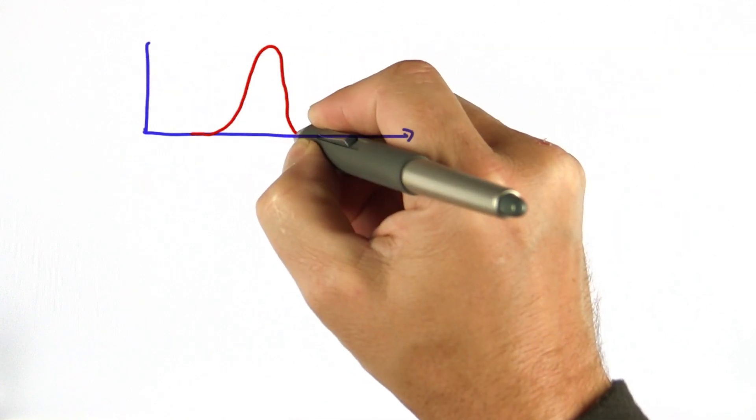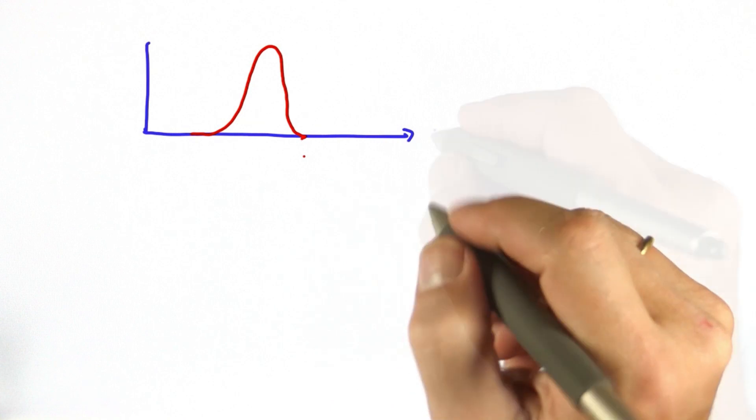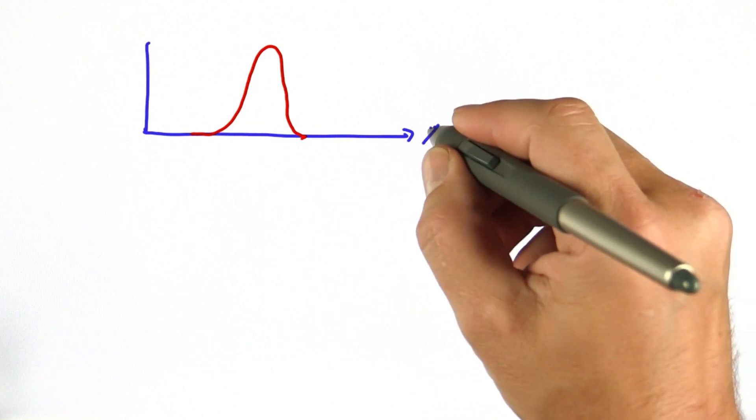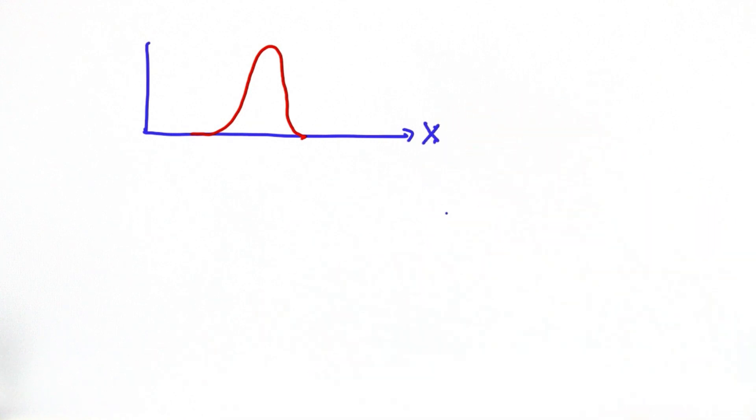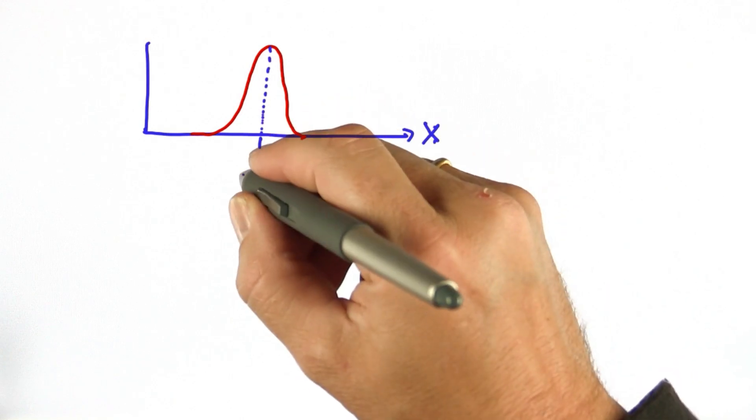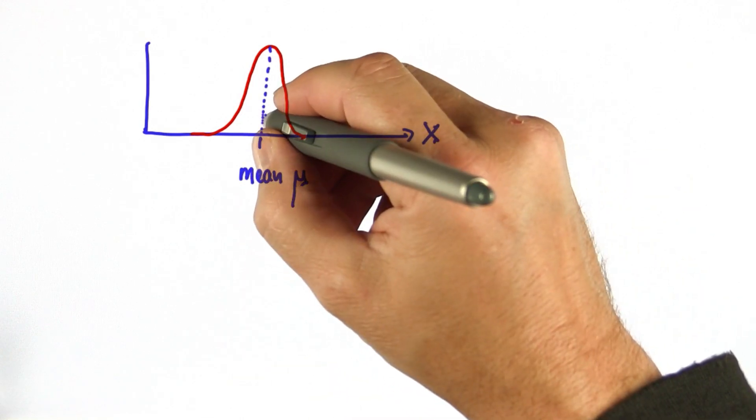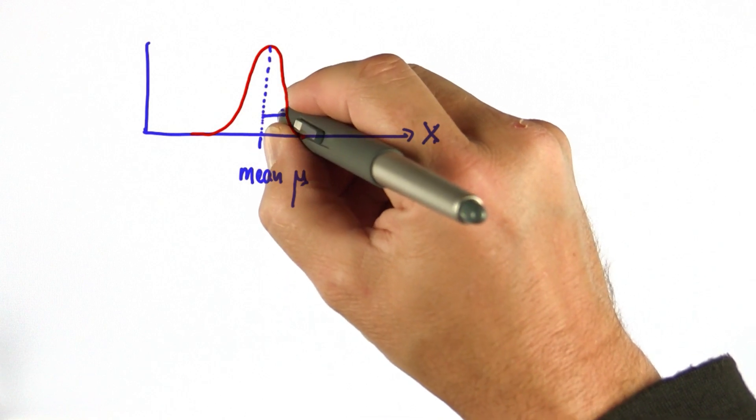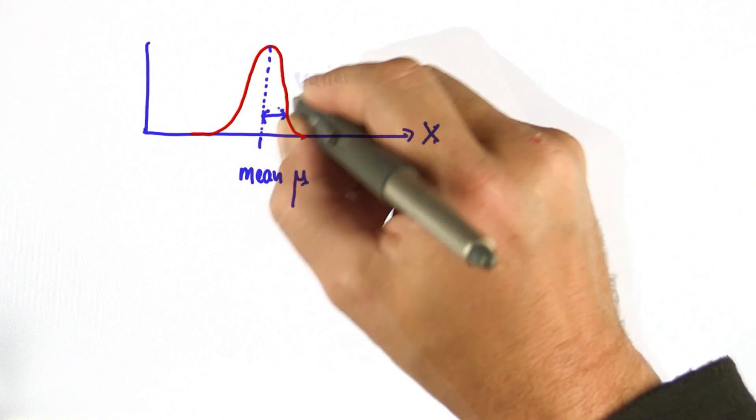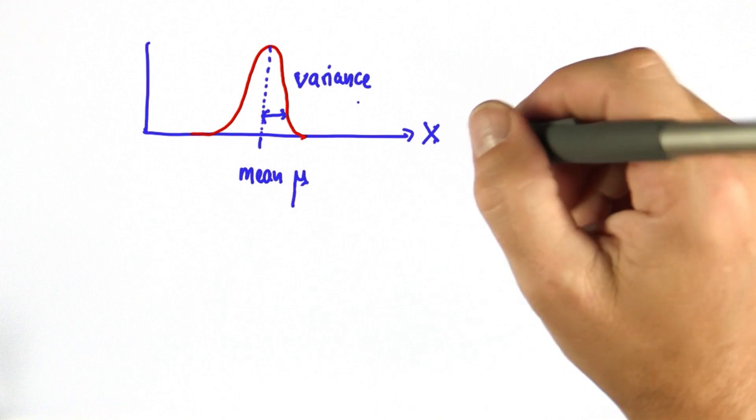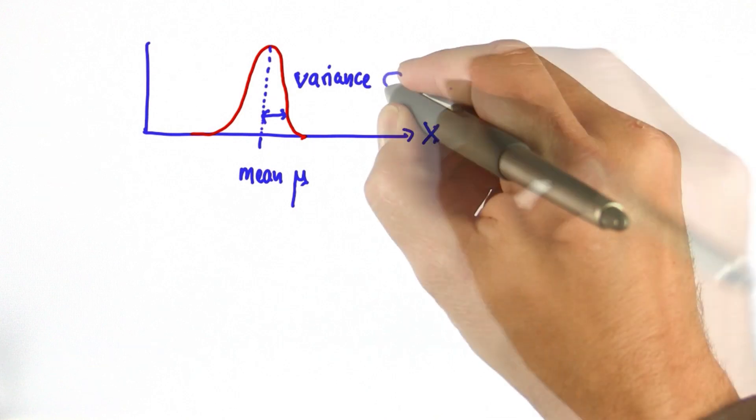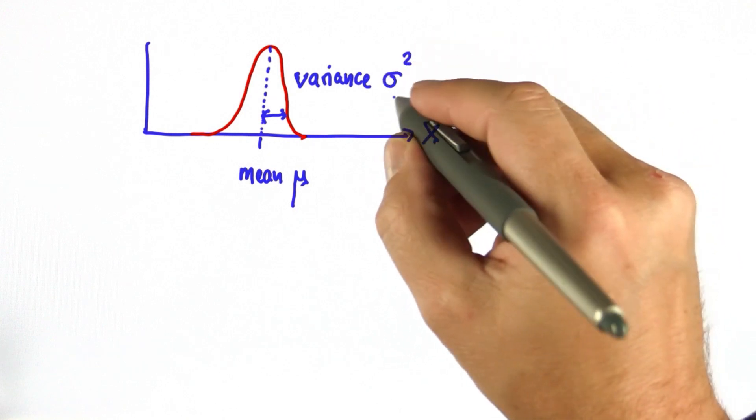So here's our Gaussian again. And if we call the space x, then the Gaussian is characterized by two parameters: the mean, often abbreviated with the Greek letter mu, and the width of the Gaussian, often called the variance. And for reasons I don't want to go into, it's often written as a quadratic variable, sigma squared.